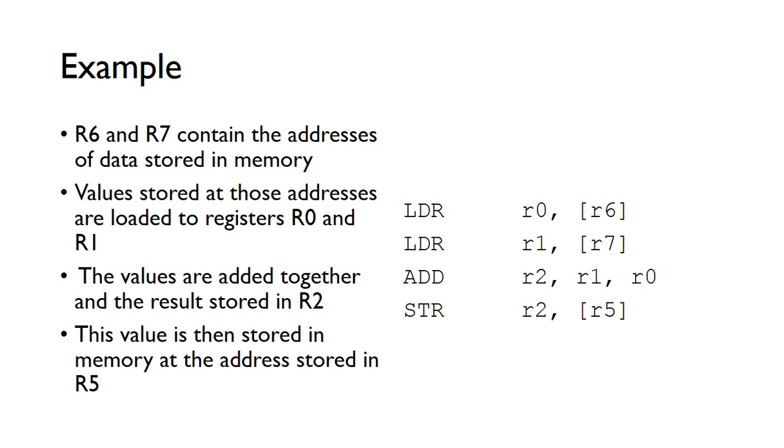Let's look at an example. In this example, we're going to assume that register six and register seven contain the addresses of where data is stored in memory. We want to load those values that are stored in those addresses and load them in register zero and register one. We're going to add those together and store the result in R2, then copy the value in R2 to the address stored in R5.